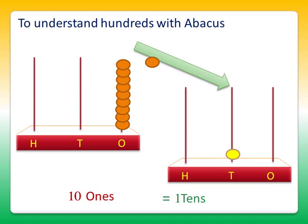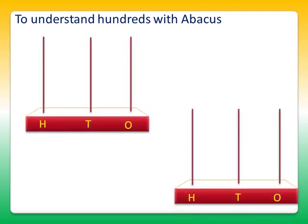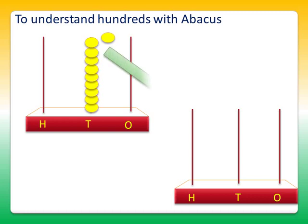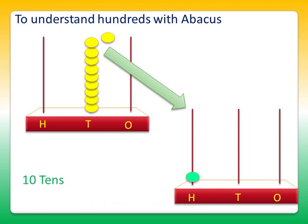In the same way, let's put some beads in the ten's abacus stick. It's 1, 2, 3, 4, 5, 6, 7, 8, 9, and 10. Since we cannot put the 10th bead in the ten's abacus stick, we put 1 bead in the 100's stick instead of putting 10 beads in the ten's stick. And again, we do this by removing all the beads from the ten's stick. So 10 tens are equal to 100.